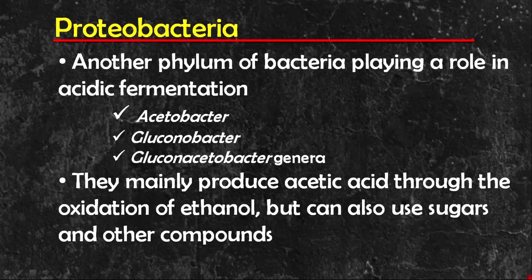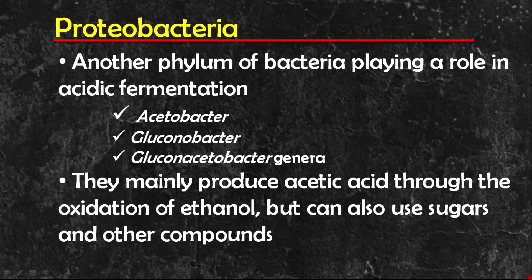Another phylum of bacteria playing a role in acidic fermentation is Proteobacteria, with the Acetobacter, Gluconobacter, and Gluconacetobacter genera. They mainly produce acetic acid through the oxidation of ethanol but can also use sugars and other compounds. These genera are mainly known to ferment wine into vinegar but have more recently been identified as playing important roles in tea, cocoa, and coffee fermentation.